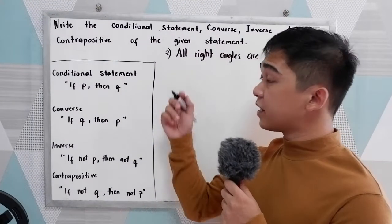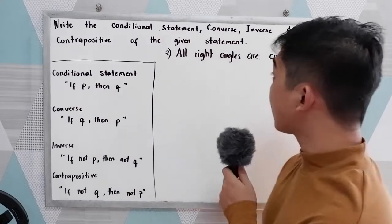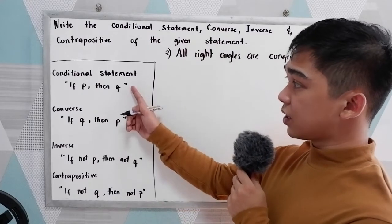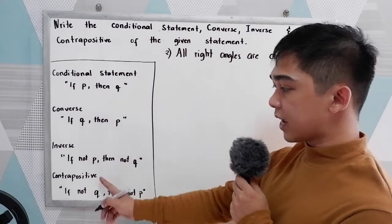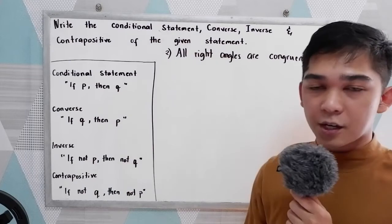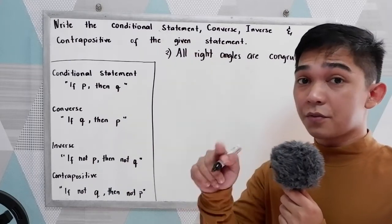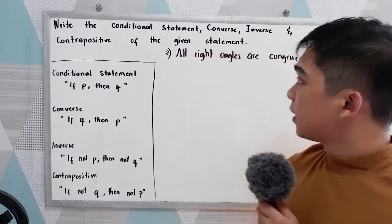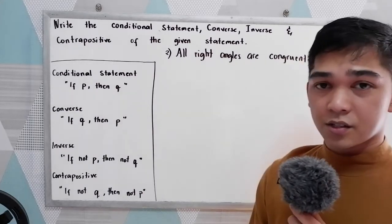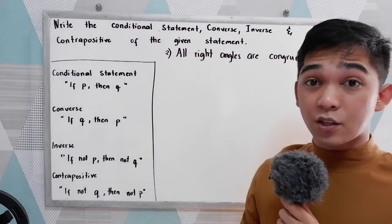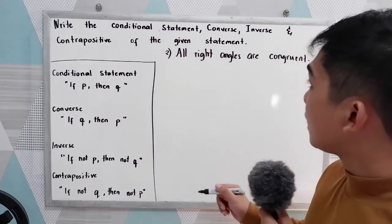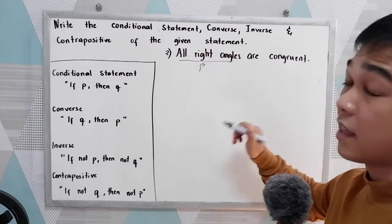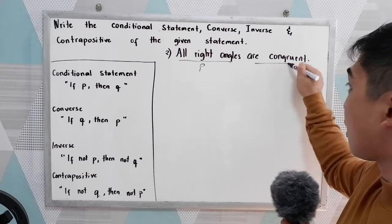For our second example: 'All right angles are congruent.' I want you to write the conditional statement, converse, inverse, and contrapositive. Pause the video if you want to answer, then resume to check your answers. Let's check: identify p and q. Our hypothesis p is 'all right angles' and our conclusion q is 'are congruent.'